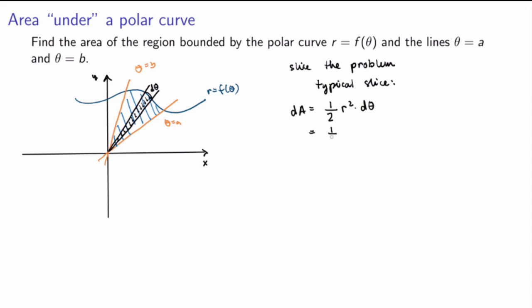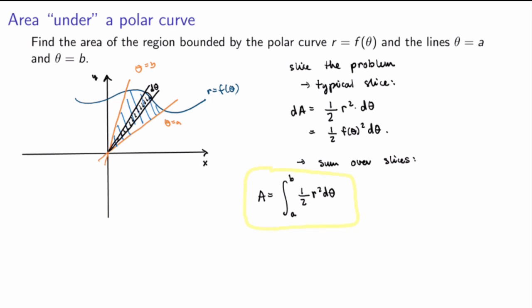That was the typical slice. The second step is to sum over all slices, which means integrating as dθ goes to zero. So the area is the integral from theta equals a to theta equals b of (1/2)·r²·dθ. That is the general formula for calculating the area of a region enclosed by a polar curve and two rays theta equals a and theta equals b.